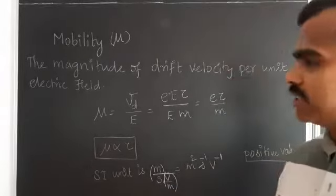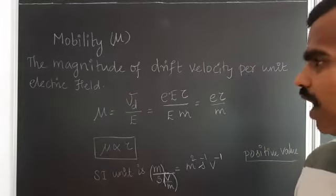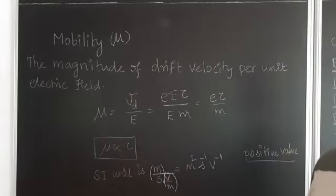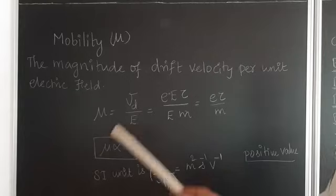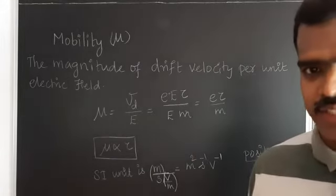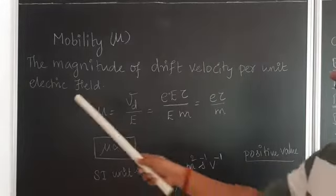So now we move on to the concept. What is mobility? It is the ratio or the magnitude of drift velocity per unit electric field. As we know that drift velocity is the average velocity per unit electric field.